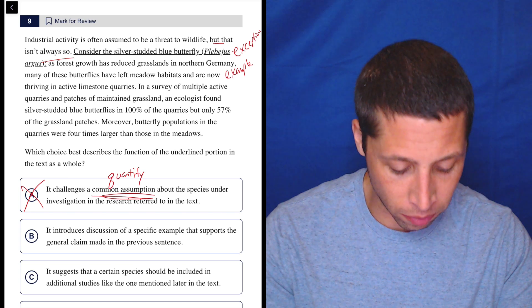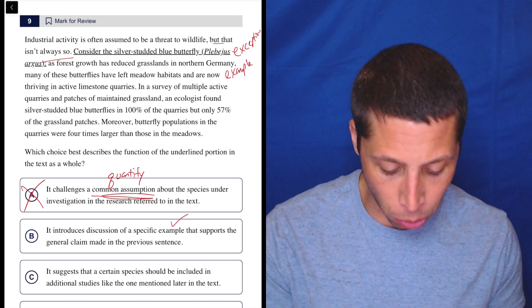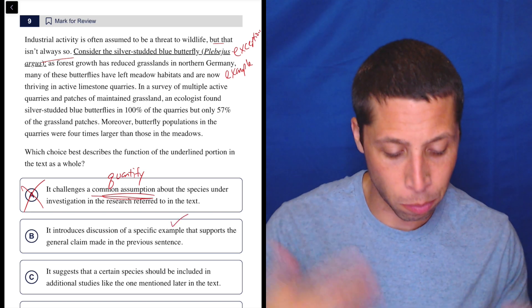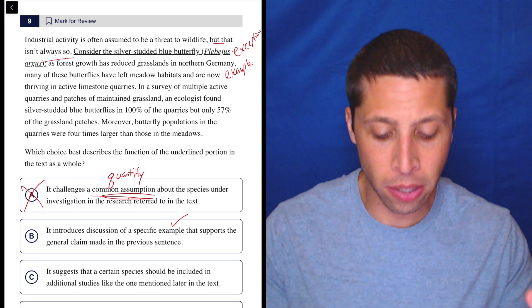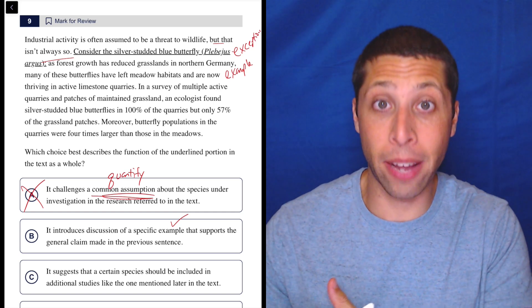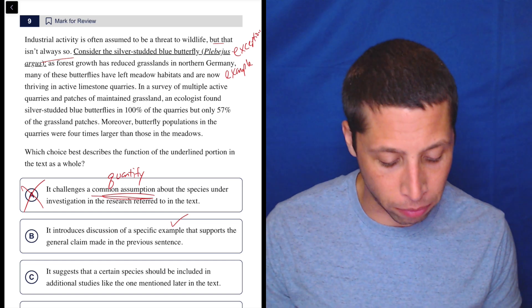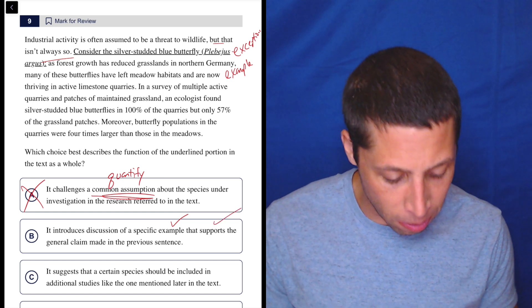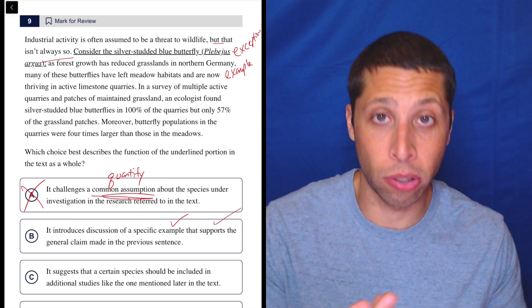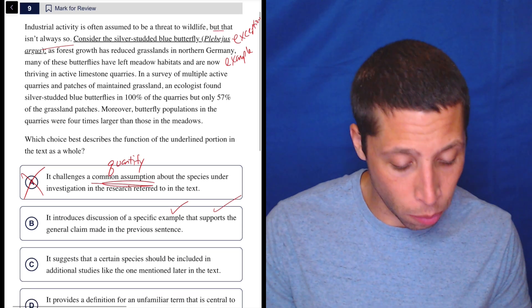B, it introduces discussion of a specific example that supports the general claim in the previous sentence. Well, the previous sentence is saying it's often assumed that industrialization is bad for wildlife, but here's an example where it's actually good. And then they continue to talk about the butterfly. I'm pretty sure this is it. It does seem to support the claim that industrialization can be good. Let's look at the other choices, though. We always want to be thorough.